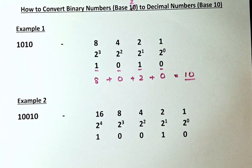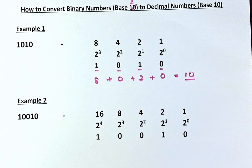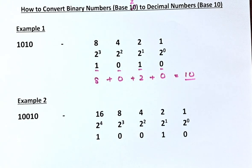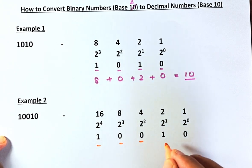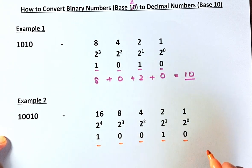Okay, that's easy enough. Now we are going to do a second example — a harder example — a 5-digit number: 1, 0, 0, 1, 0. So again we are going to write 1, 0, 0, 1, 0.